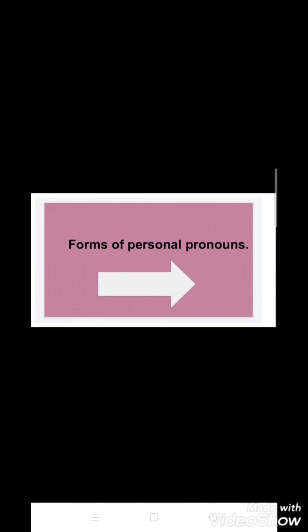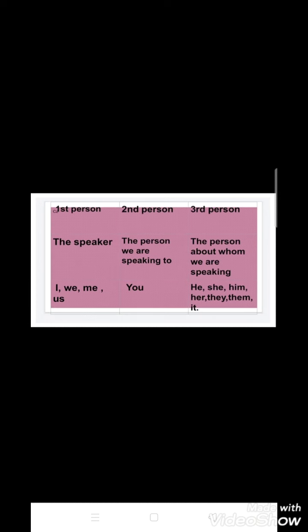Now let's see the forms of personal pronouns. We can divide personal pronouns into three forms: first person, second person, and third person. The first person refers to the speaker. The second person refers to the person we are speaking to. The third person refers to the person about whom we are speaking. The pronouns under first person are I, we, me, us. The pronoun under second person is you. And except first and second person, all other remaining pronouns fall under the third person — for example, he, she, him, her, they, them, it, etc.